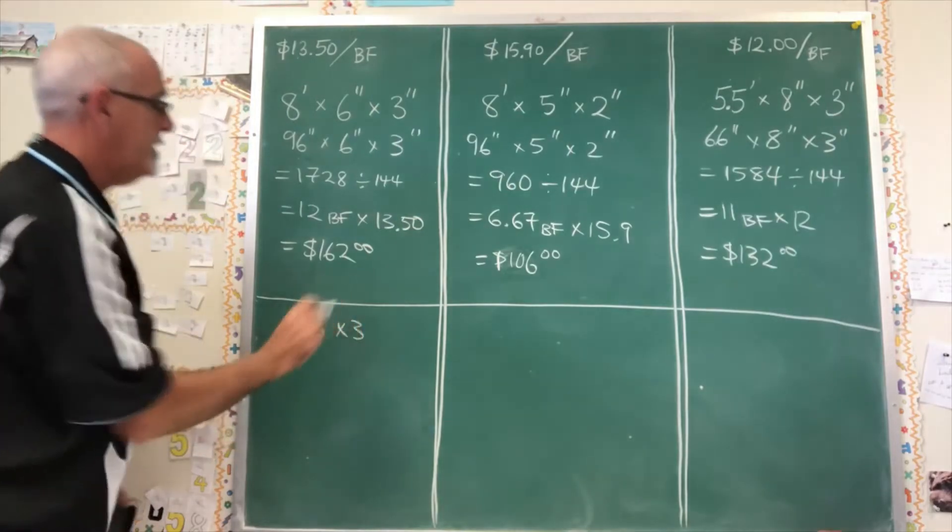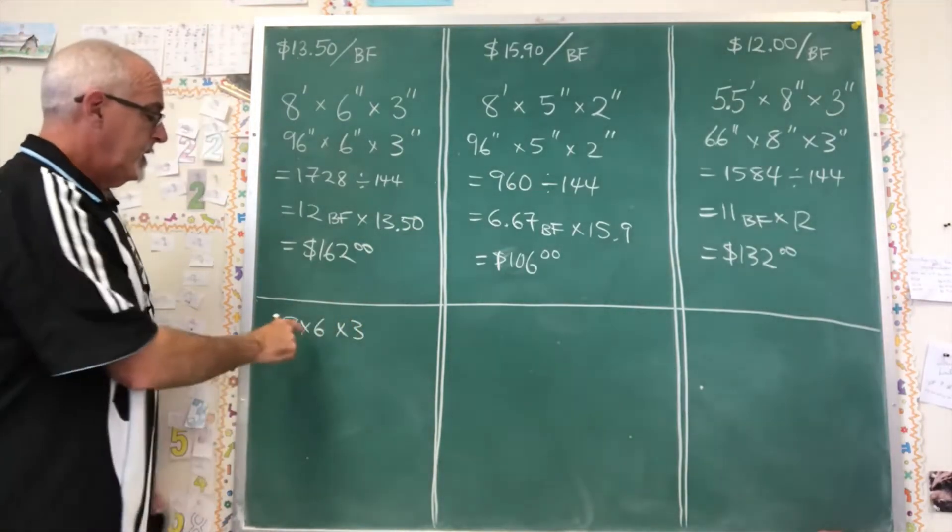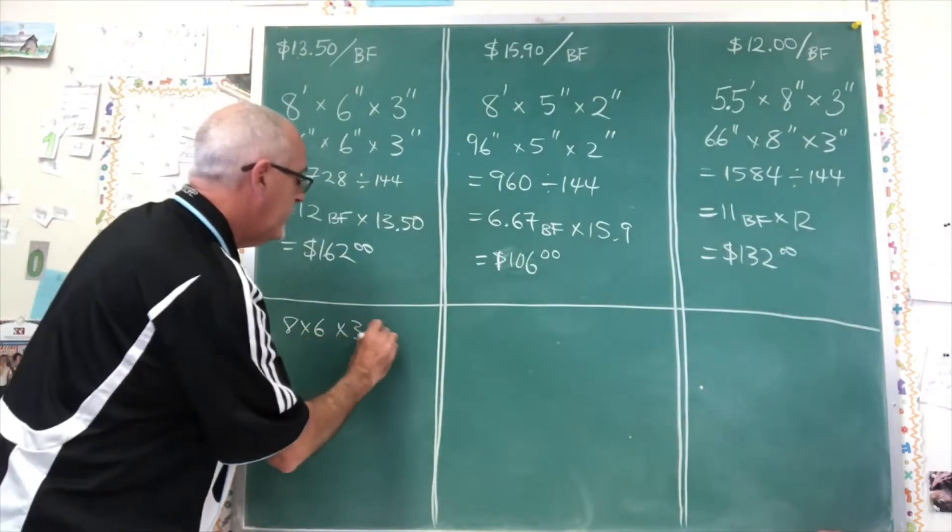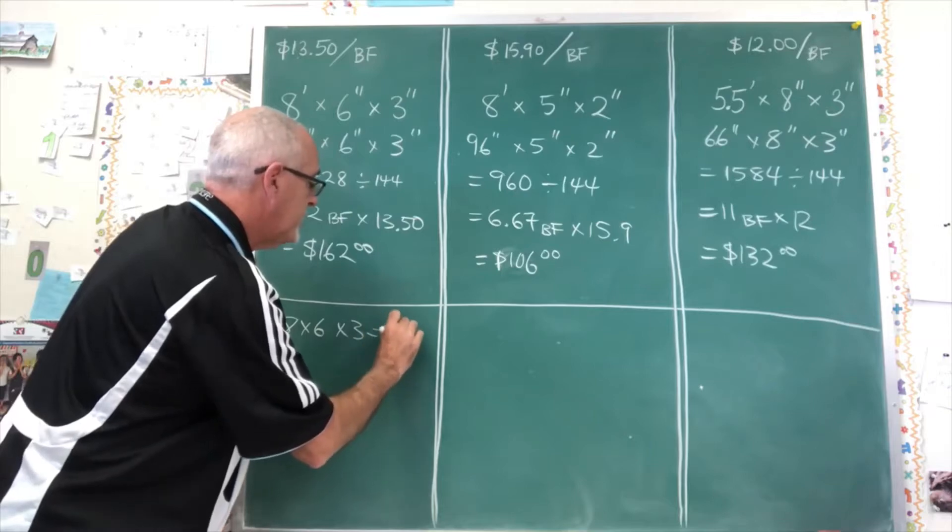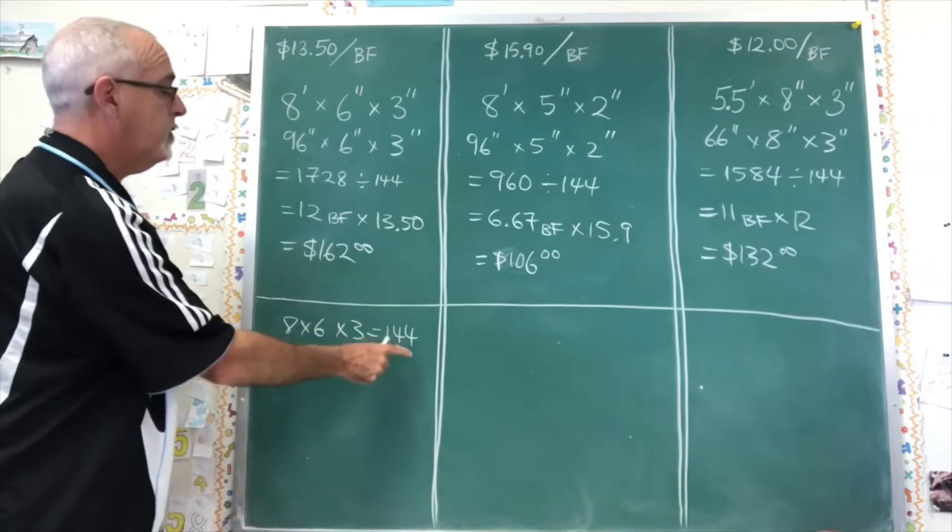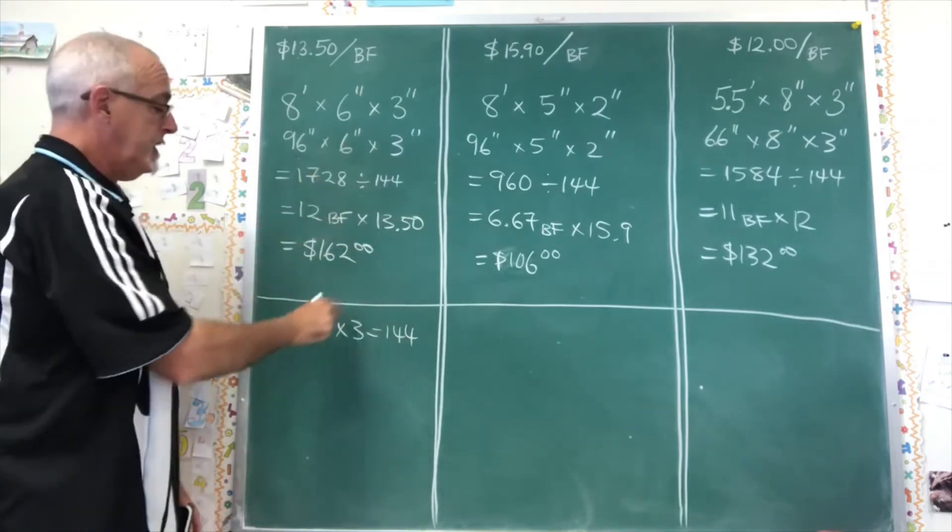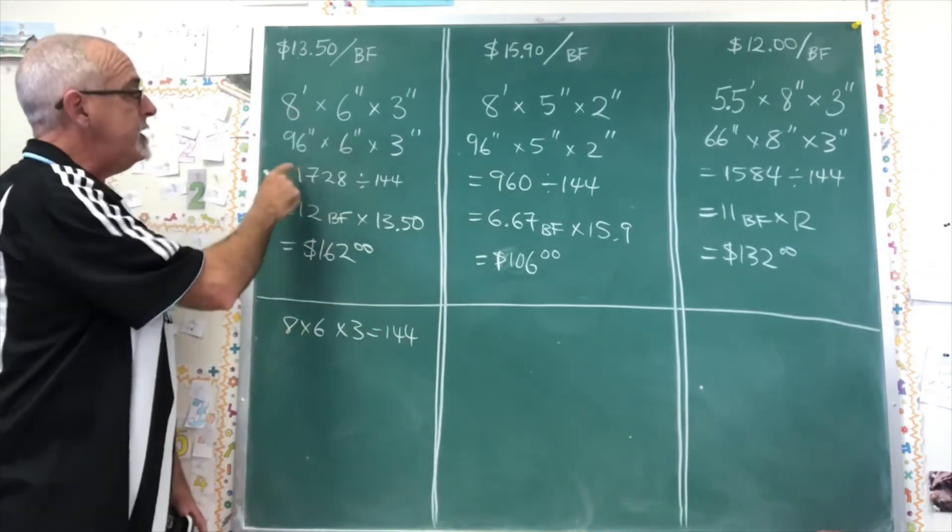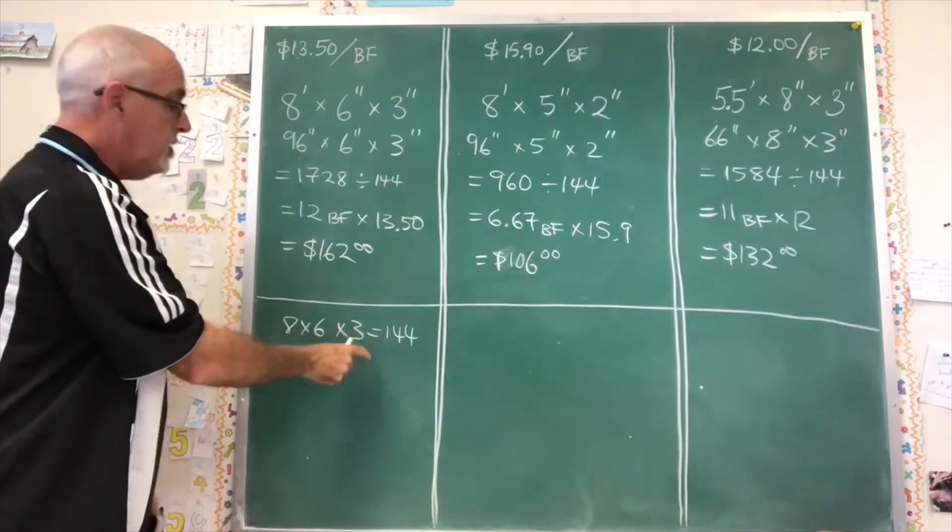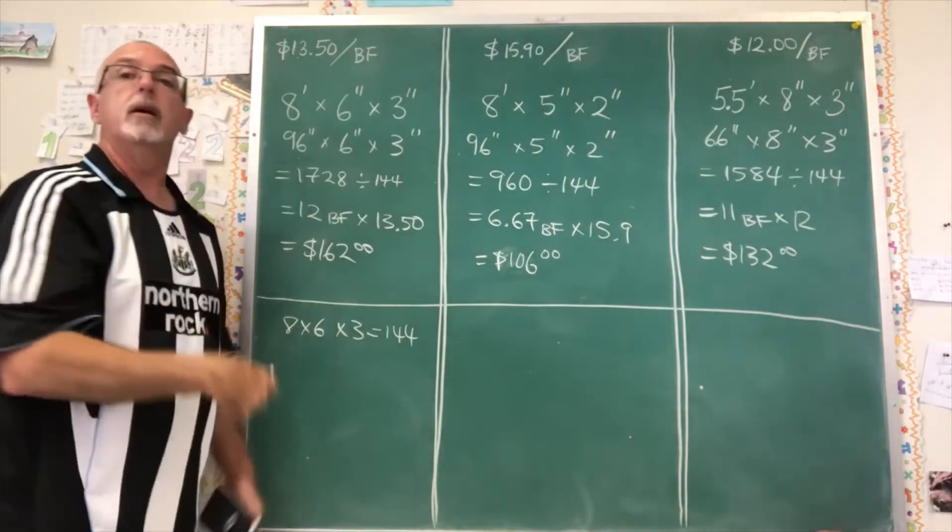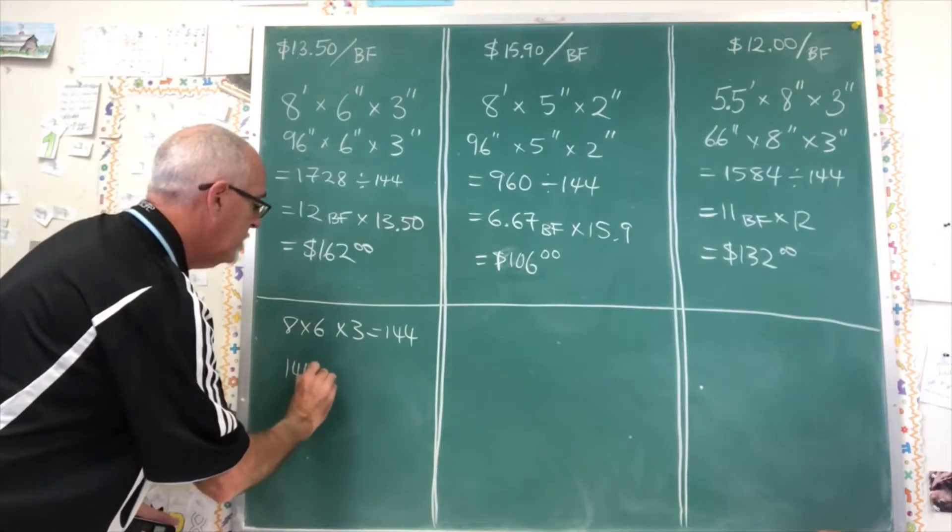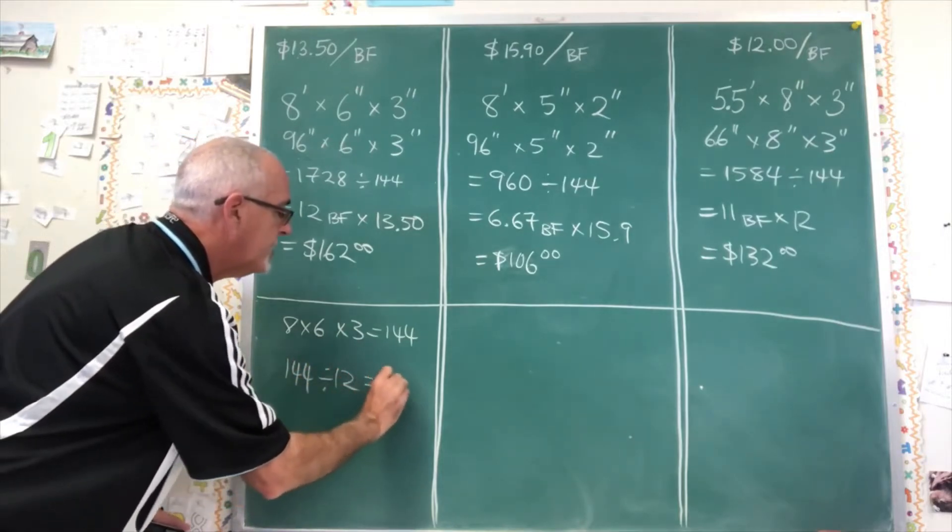And I'm doing 8 times 6 times 3. That I can do in my head. 8 times 6 is 48 times 3 is 144. Let's see if I'm right. Yep, it's 144. But because I didn't convert the 8 feet into 96 inches, I didn't multiply that 8 by 12. That means I don't want to divide this number by 144. I want to divide it by 12 instead.